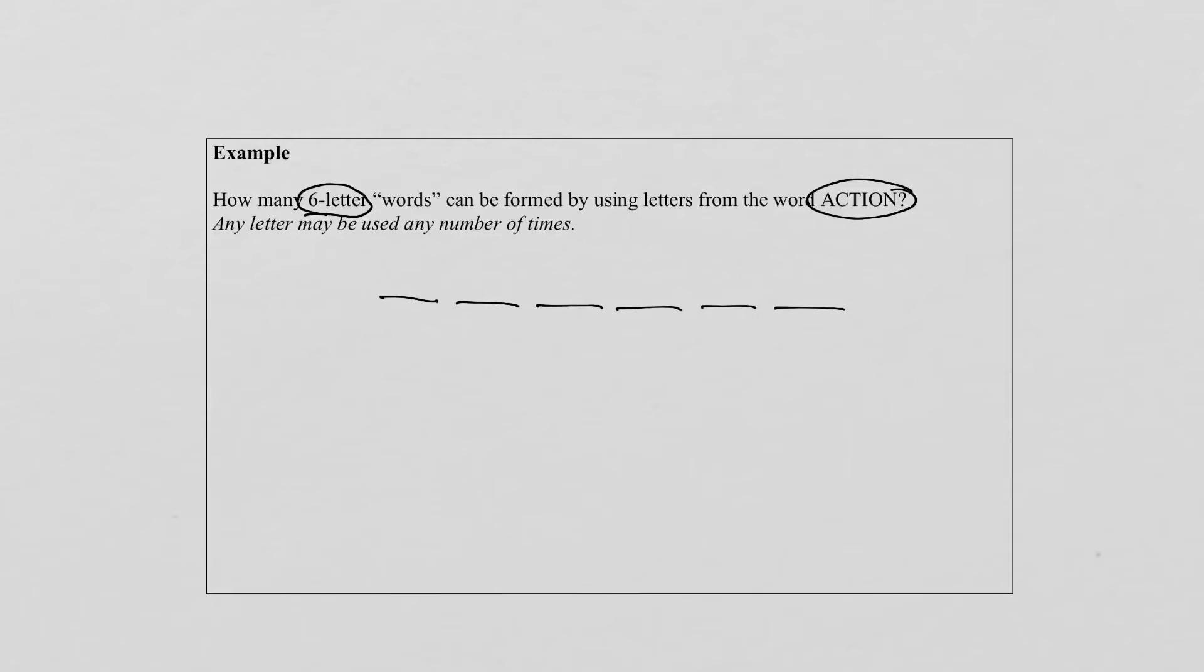So the first position of these words, there are six possibilities because we can use any one of those six letters in position one. When we get to position two, we can use any one of those letters again because they may repeat. So even if we use the A in the first position, we can use it in the second position as well. So that means there are six possibilities again.